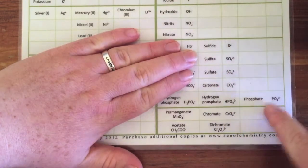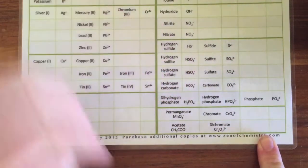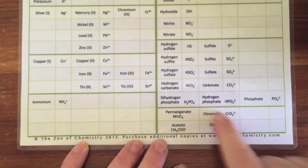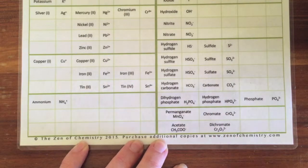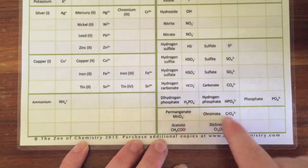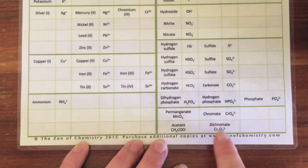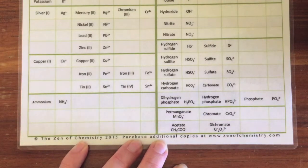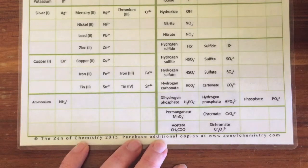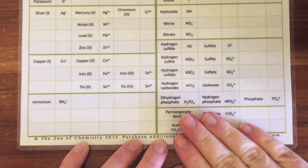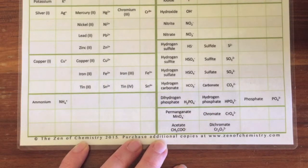The ones down the bottom here are a little bit trickier again. These four - permanganate, chromate, acetate, and dichromate - you still need to learn. They're probably ones that if you're in a hurry to learn them I'd leave them till later. You still need to learn them for year 12, but if you're struggling in year 11 you can kind of leave those ones out for the minute.